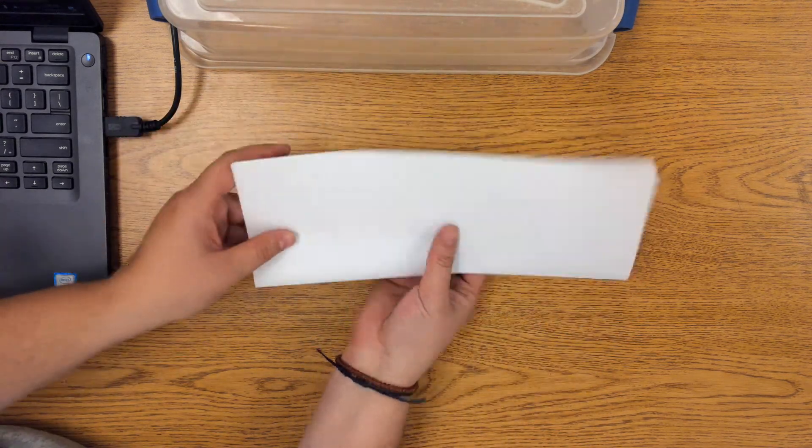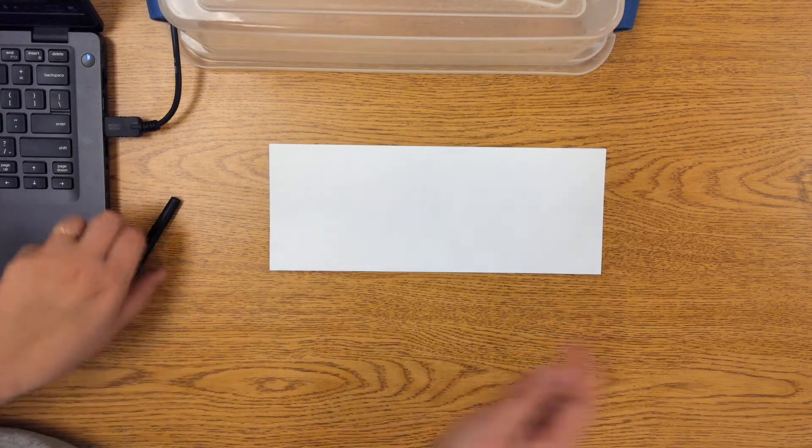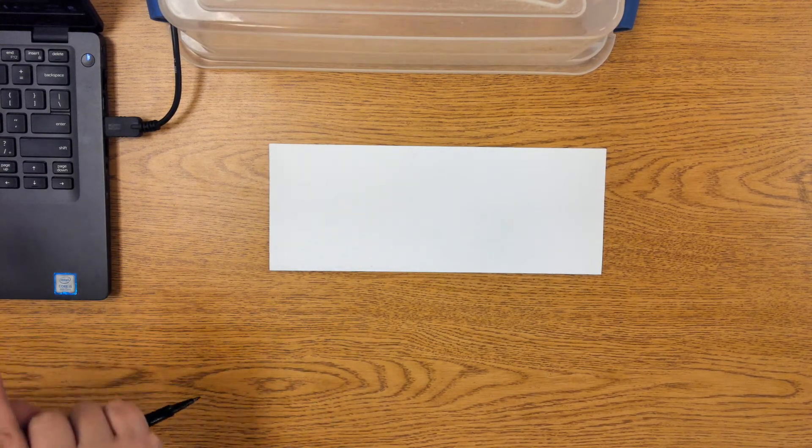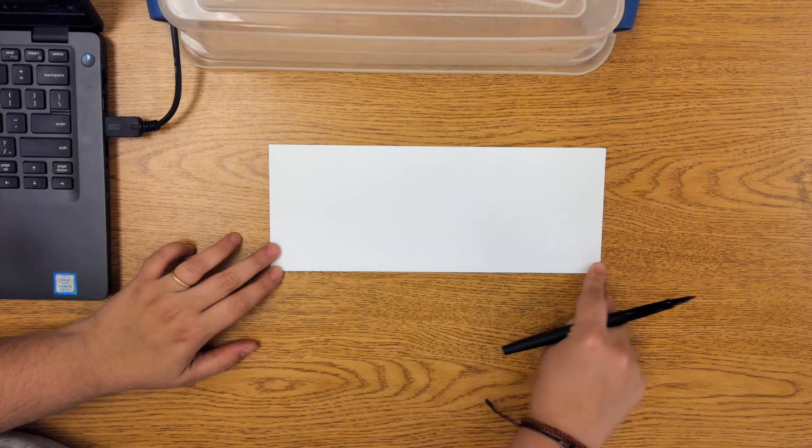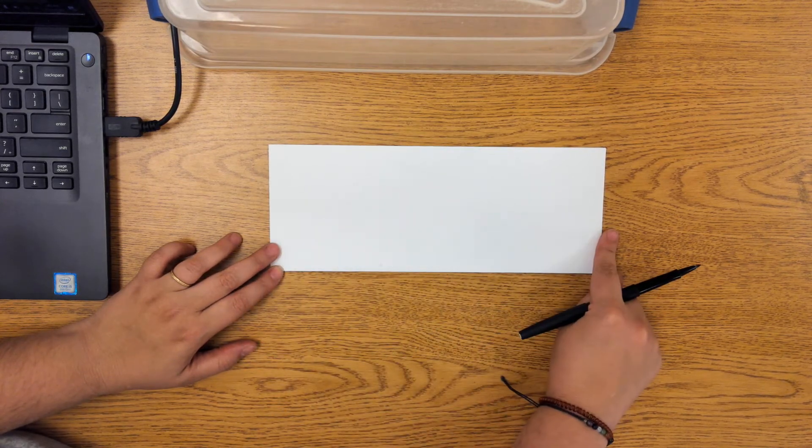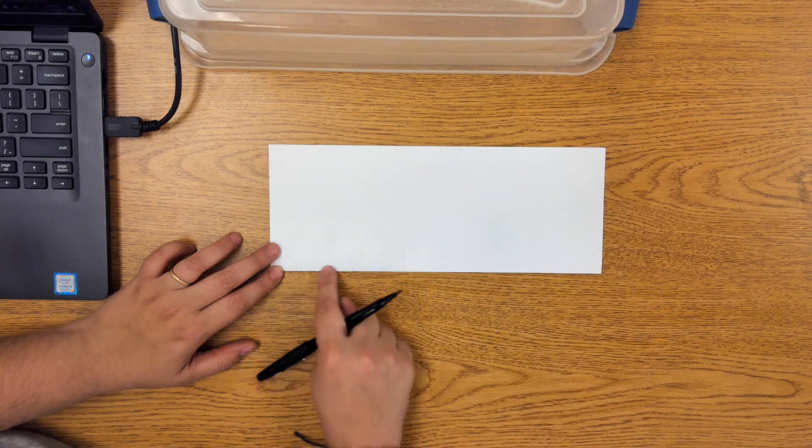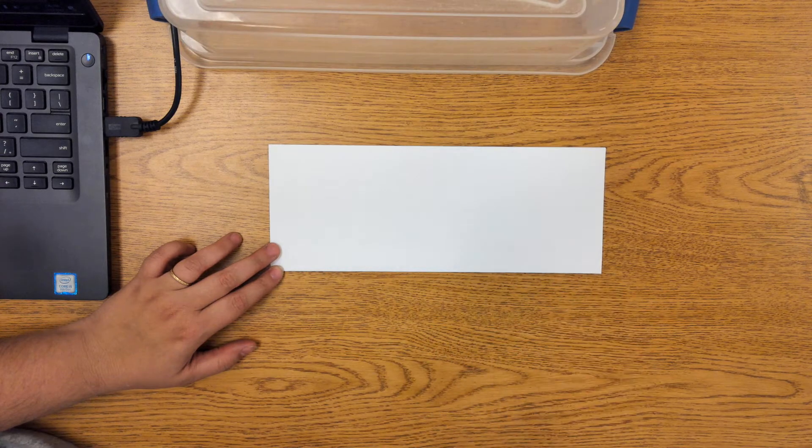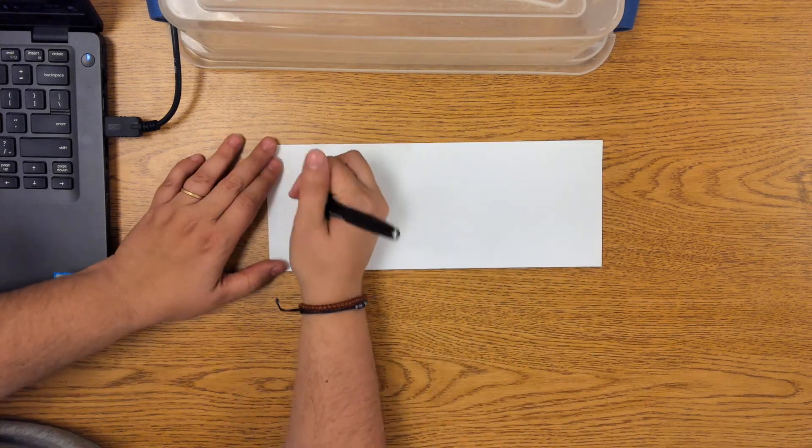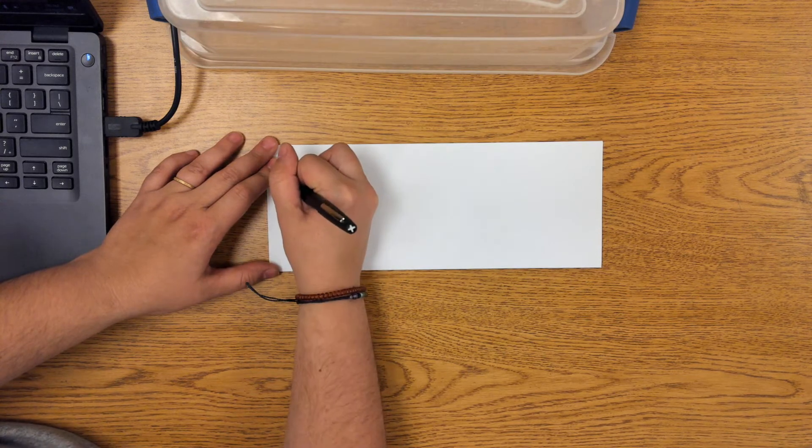You're going to write your name with the bottom where that fold is across your paper here. So you want your name to be right on here like this is a line you're writing your name on. If you have a really long name, you want to be careful not to make it take up too much space or run out of space.